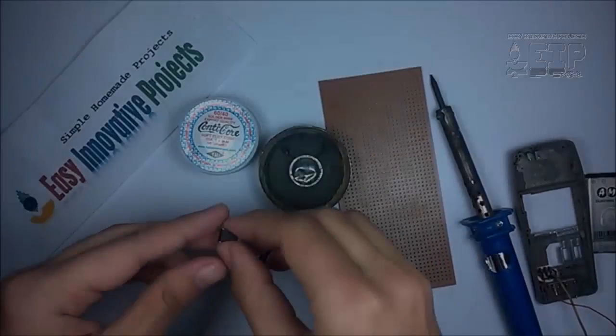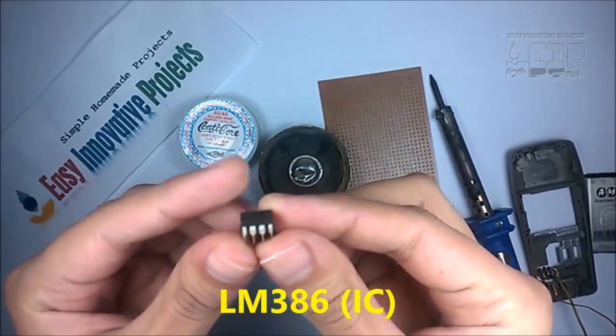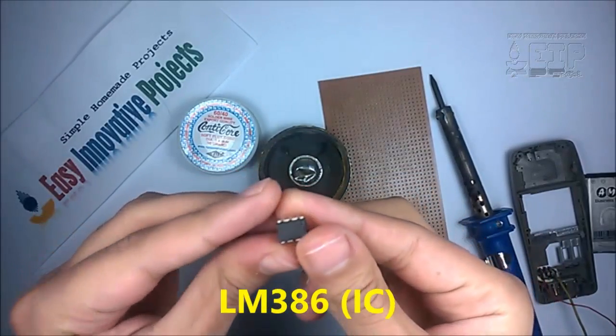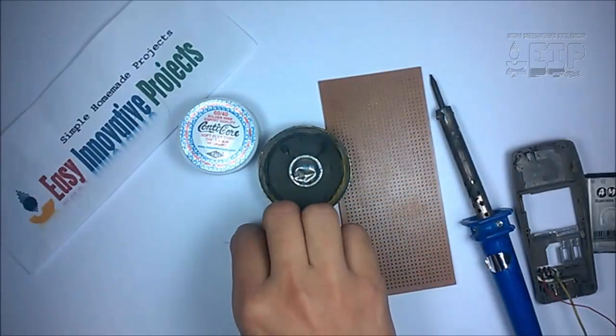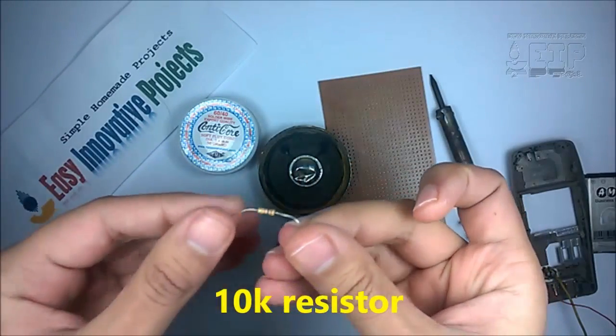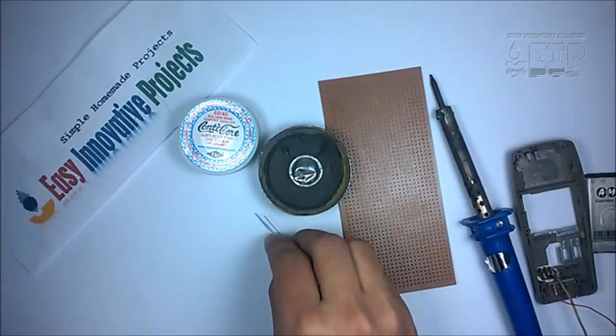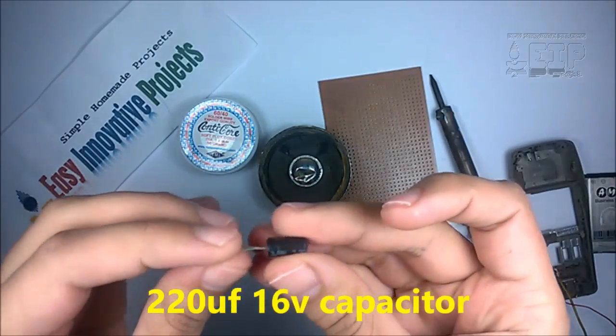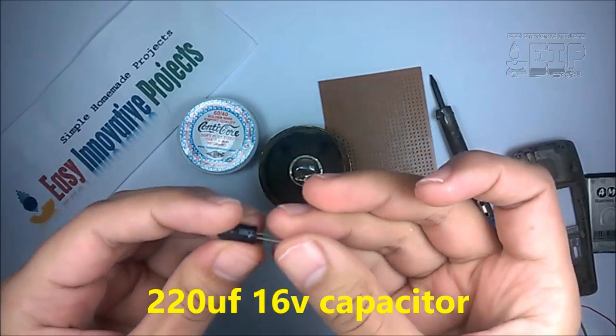Hello friends, today we make an LM386 audio amplifier circuit for mobile at home. For making this project we need some ingredients: one IC LM386, 10k resistor, 220 microfarad 16 volt capacitor.